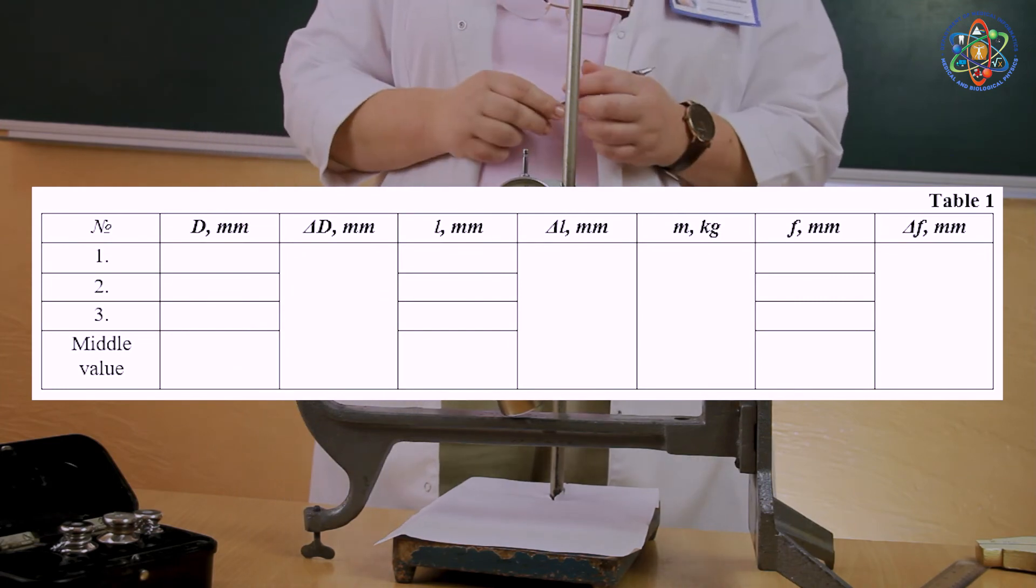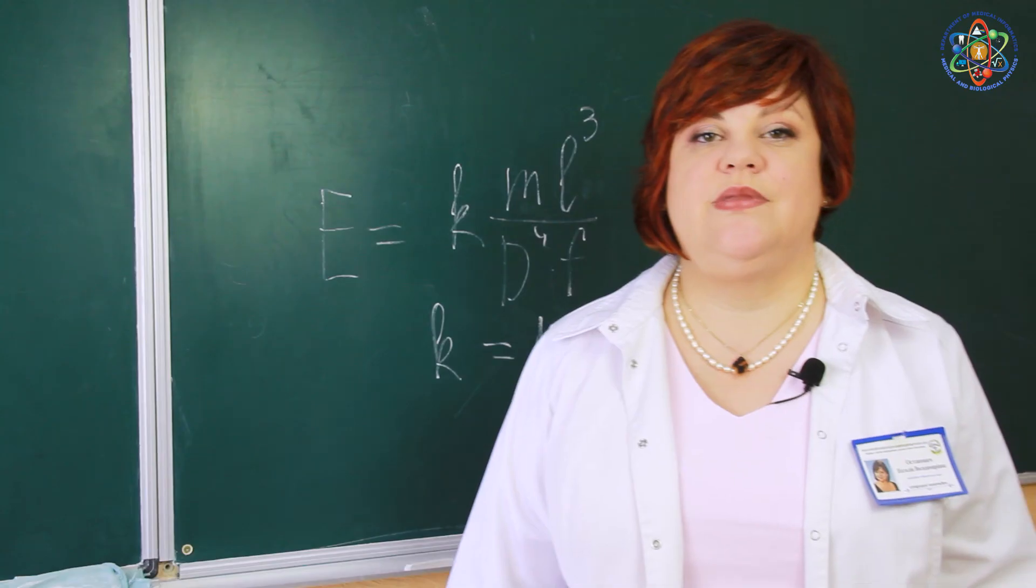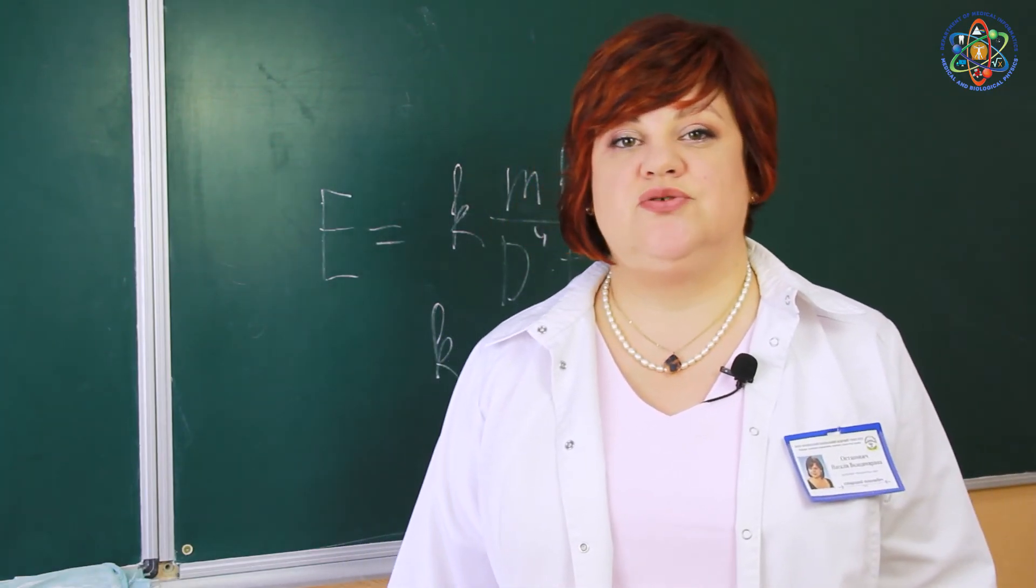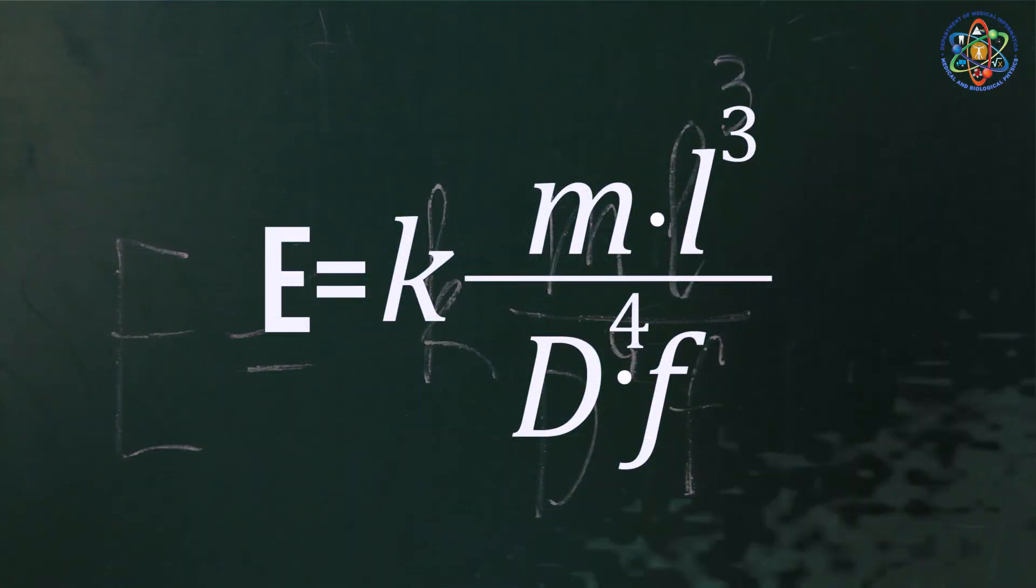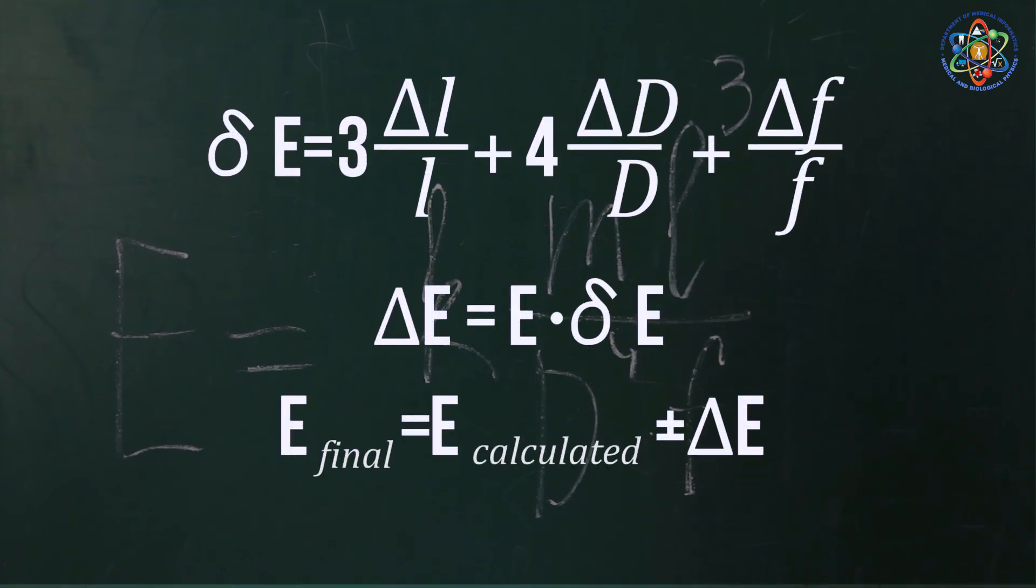After that, we tabulate the experiment results. Next, we transfer the results to the international standard units. We calculate the Young's modulus of the bone tissue according to the given formula. Finally, we calculate the measurement errors and draw the conclusions.